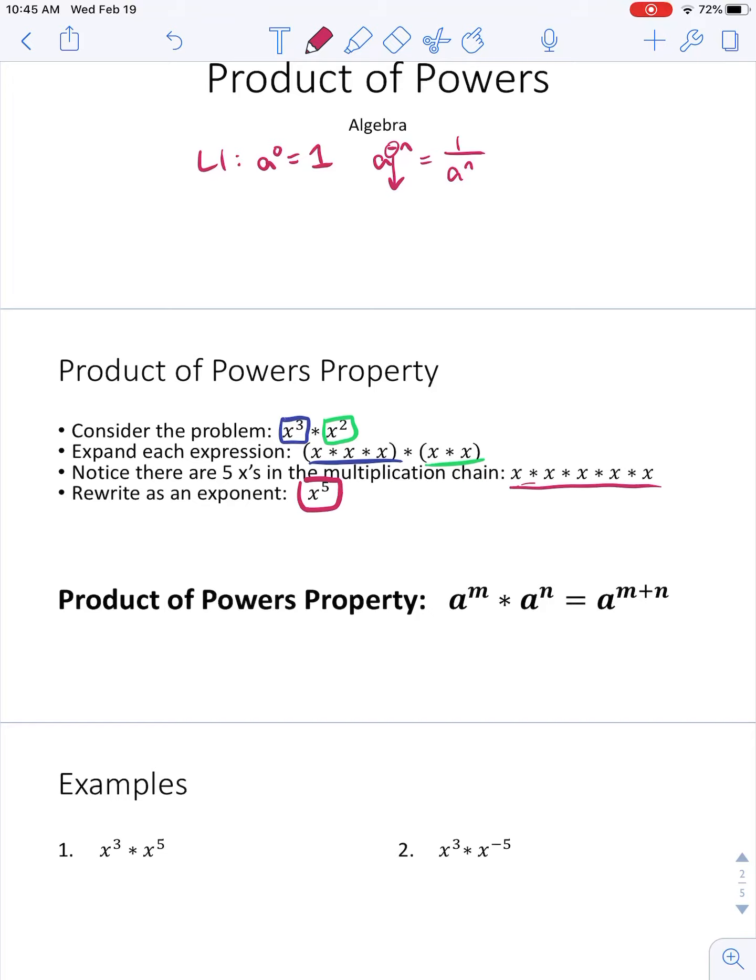So that shows you that if I have 2 bases that are the same, so that means I have this x here and this x here, matching bases. If I have 2 bases that are the same, I can just add the exponents. 3 plus 2 equals 5. So x to the 3rd times x to the 2nd equals x to the 3 plus 2, which is x to the 5th.